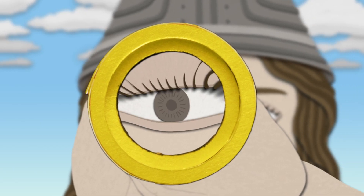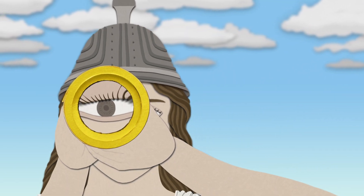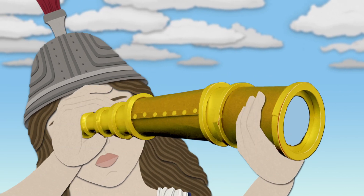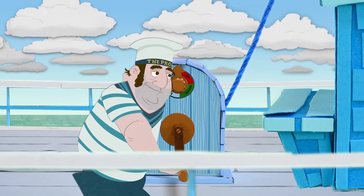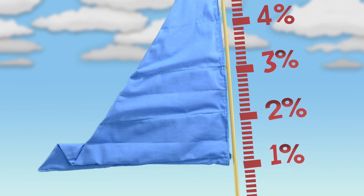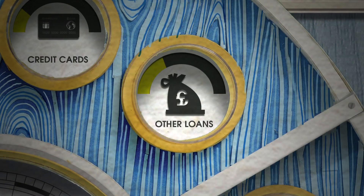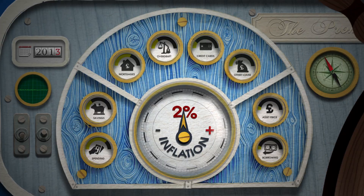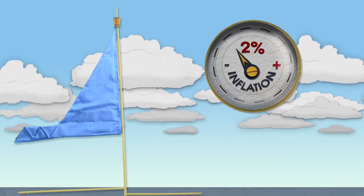To stop prices rising too fast, the Bank reduces the amount of spending in the economy by adjusting the cost of money. It does this by setting the interest rate on its dealings with financial institutions. This in turn affects the rate on savings, mortgages, overdrafts and other loans — all of which influences how much is spent and saved, and in turn, inflation.